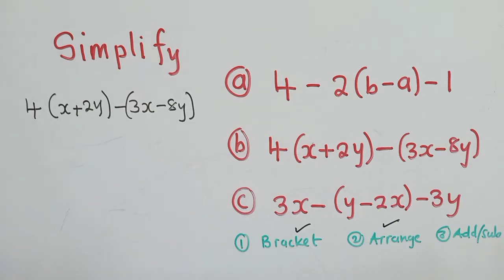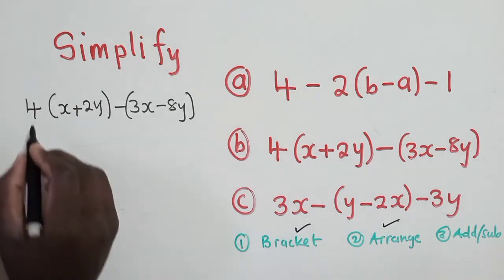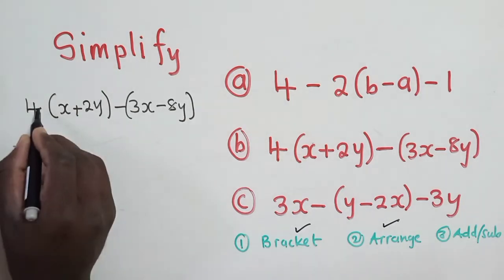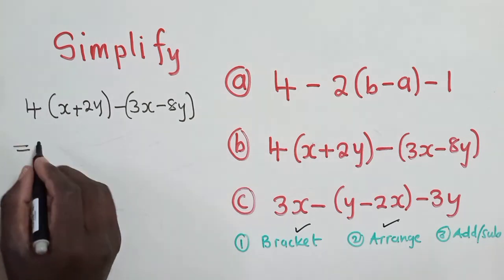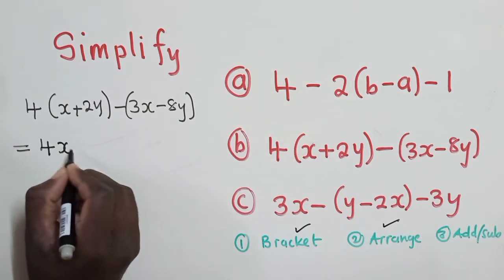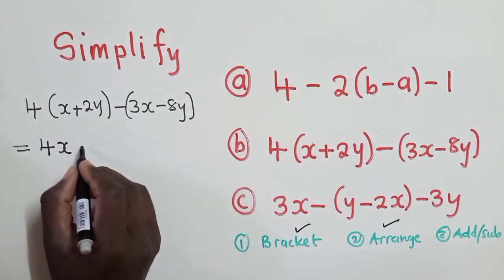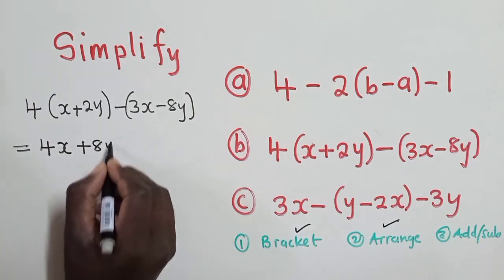So rule number 1, we get rid of the brackets. So what are we going to do? We multiply what is in front of the brackets. So like here we have 4. 4 times x, it's 4x. 4 times 2y, it's 8y.